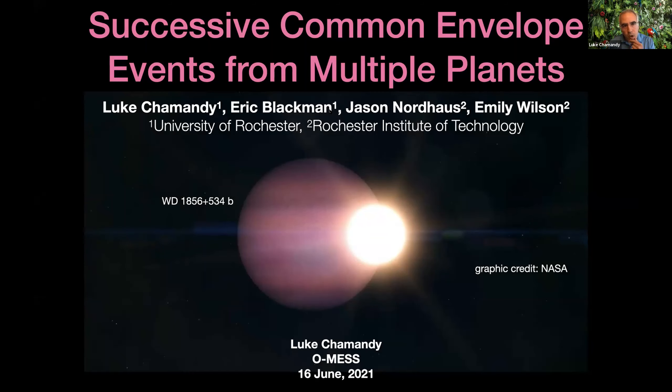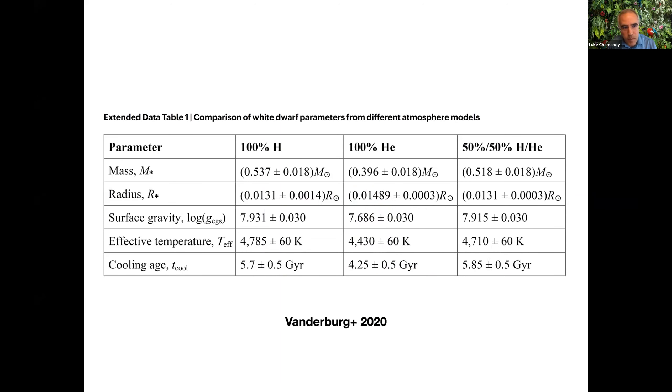Our work on this was published recently, and it's still very much a work in progress. These are my collaborators here, Eric, Jason and Emily, all based in Rochester in the US. After one of the previous questions, I just found this from the Vanderburgh et al paper. This shows the three different observational models for the white dwarf mass. The one they choose is the last one, 50%, 50%, as Felipe had mentioned. This gives some information, but there is some uncertainty based on the modeling.